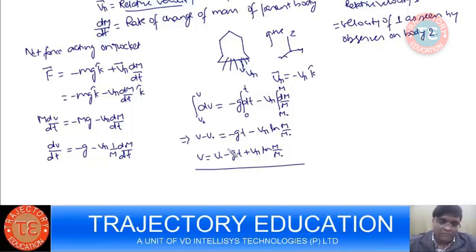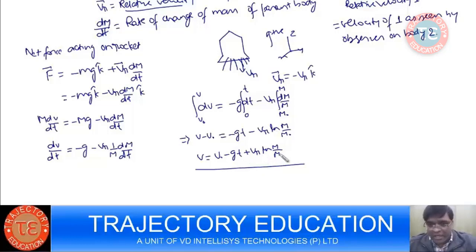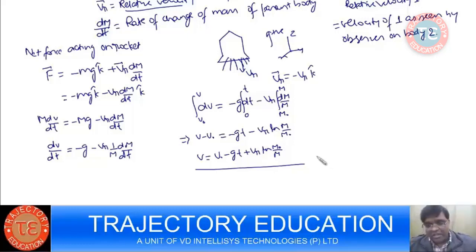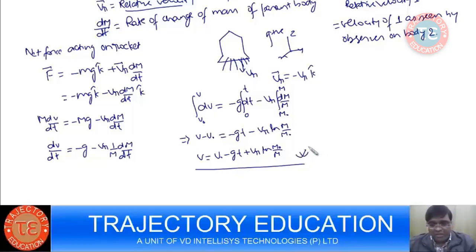That is going to be the velocity — this is how the velocity of the rocket varies. The rocket will move with higher velocity if Vr is large, meaning the mass is ejected at a very high velocity. It also depends on M0/M. The higher the rate at which the rocket mass is ejected, the higher is the thrust force and the higher is the velocity gained. This is all about the motion of the rocket.